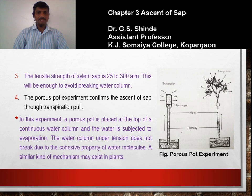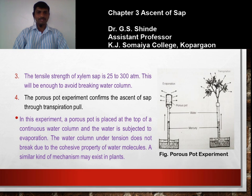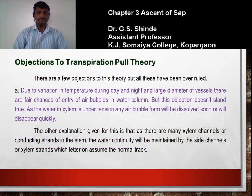The porous pot experiment confirms that ascent of sap takes place through transpiration pull. In this experiment, a porous pot is placed at the top of a continuous water column. The water column is placed in a container with water and mercury. Water evaporates through the porous pot to the outer atmosphere, creating a tension or force that sucks water upward through the tube, confirming the mechanism of transpiration pull.